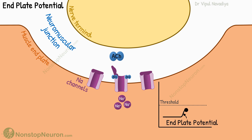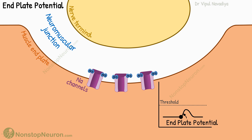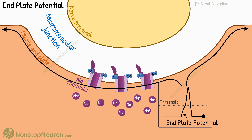If the endplate potential is weak and does not reach the threshold, no action potential is generated. Such potential stays local and fades away without spreading. However, if the stimulation is stronger, enough sodium channels open. In such a case, the threshold is reached and an action potential is generated. The action potential spreads along the membrane and leads to muscle contraction.